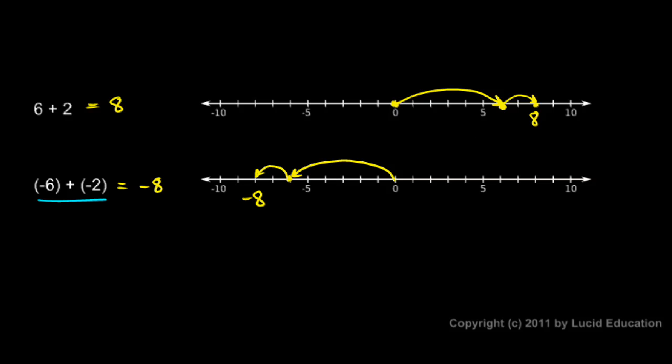And adding two negative numbers resulted in a larger negative number. Larger in the sense that it's further away from zero. It's larger in an absolute sense. So adding two negative numbers results in a larger absolute value negative number, a number that is further to the left.